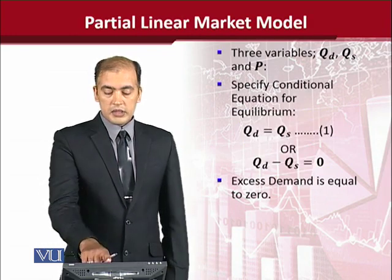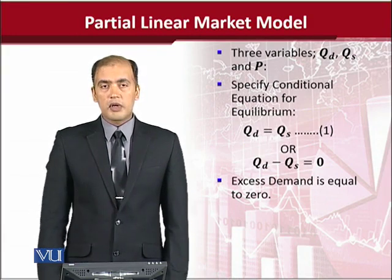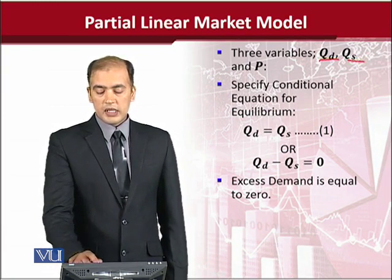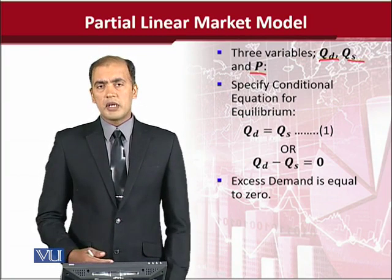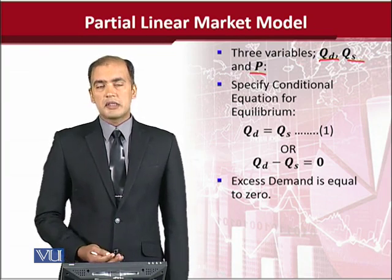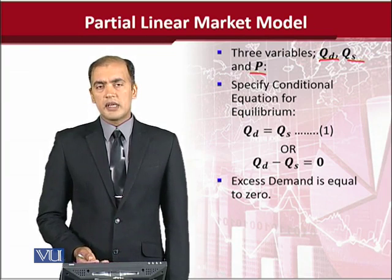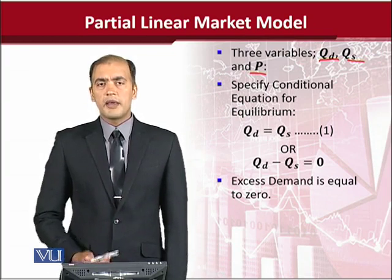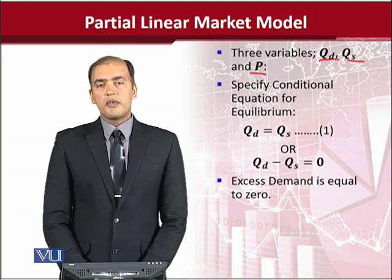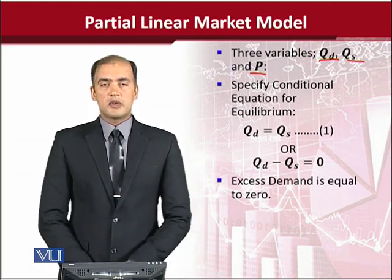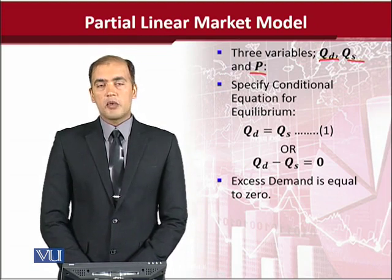This is the beginning of the development of the model. Initially we need to have variables. In a market model there are three variables: QD, that is quantity demanded; QS, quantity supplied; and P, the price. This is how we develop a model — firstly by identifying the variables that should be included, because a model is a collection of relevant variables.